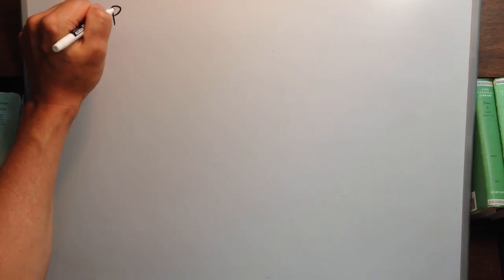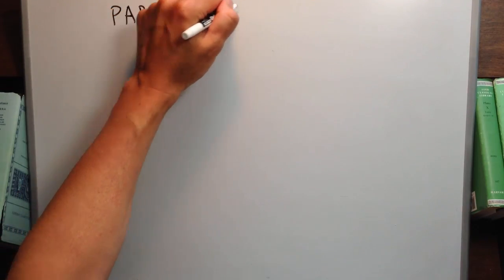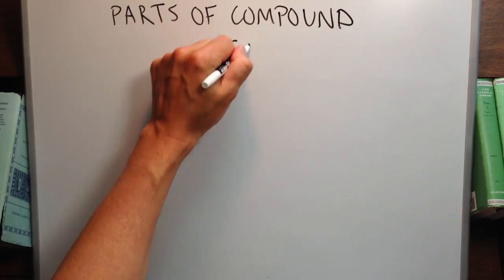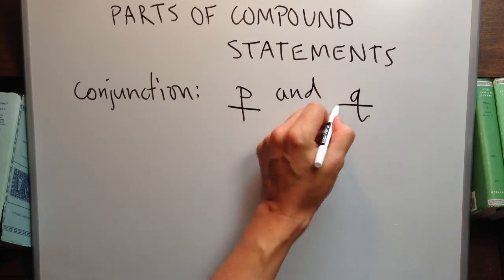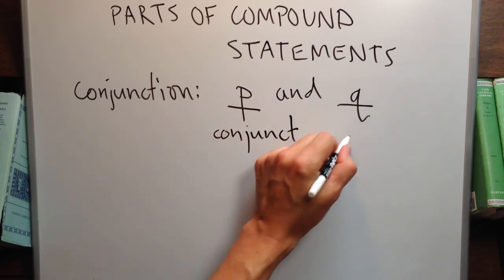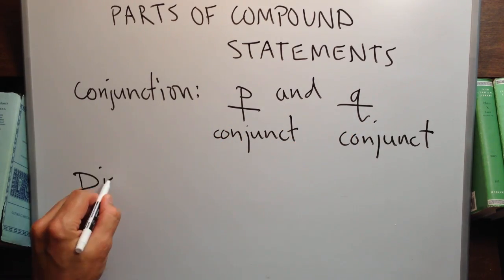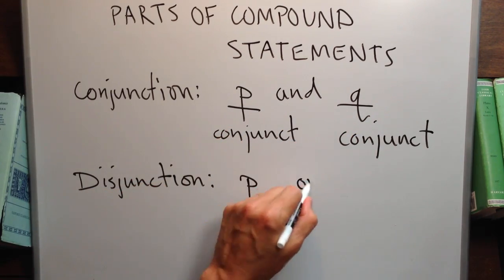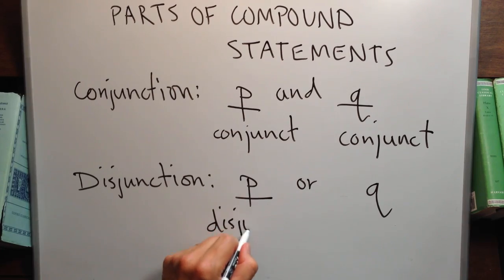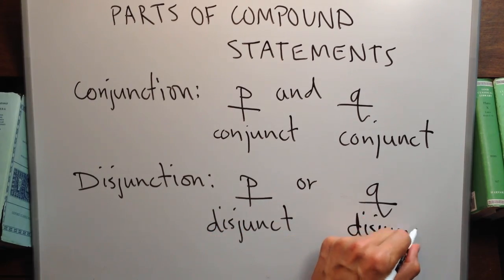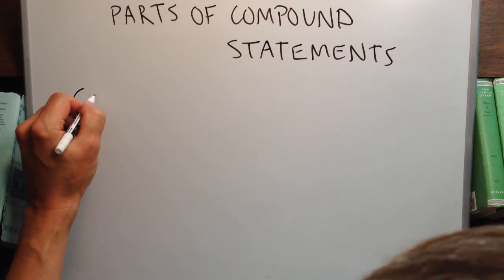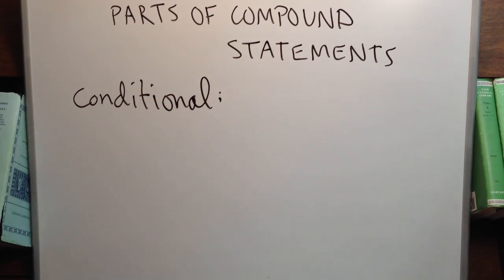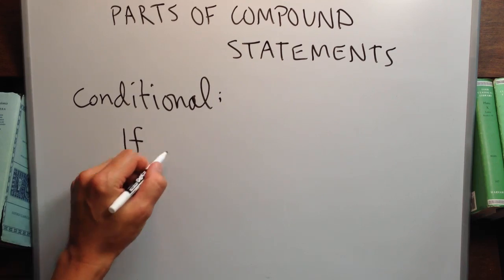P and Q are not precisely the names of the parts of compound statements. These parts have more formal names. In a conjunction, the parts are called conjuncts. In a disjunction, the parts are called disjuncts. P and Q represent statements that go into those compound statements as conjuncts or disjuncts.